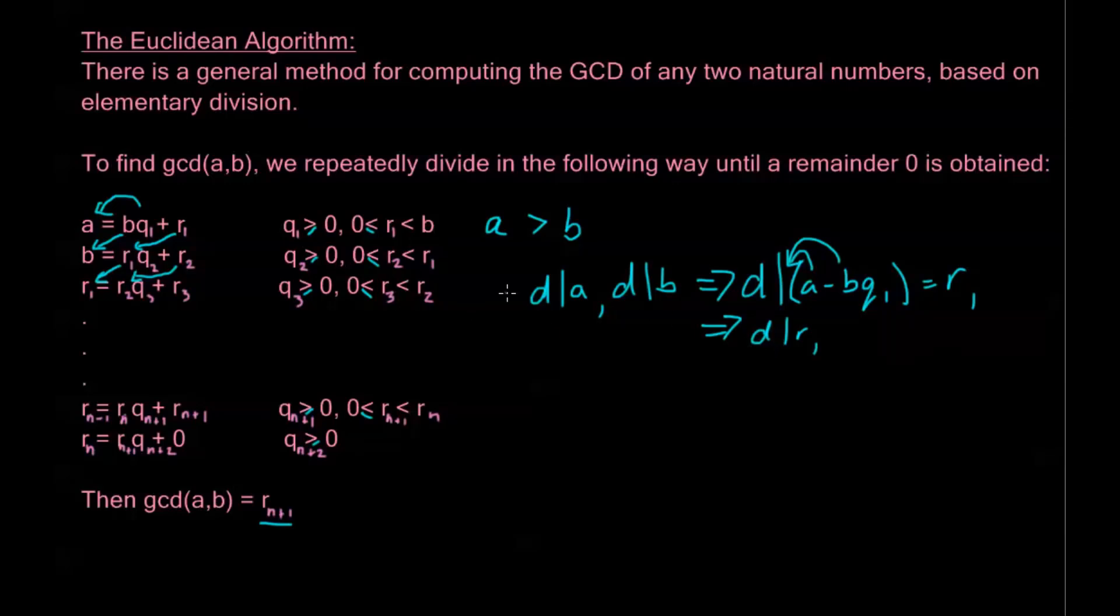This just equals R1, so in particular, this means that D divides R1. So, we continue on with this argument. If D divides B and D divides R1, then D divides R2. If D divides R1 and D divides R2, then D divides R3. So, in general, D divides RK for any of my remainders.